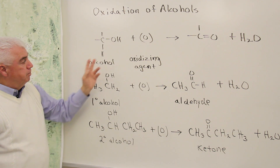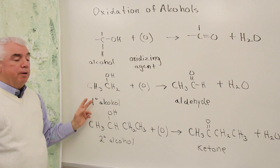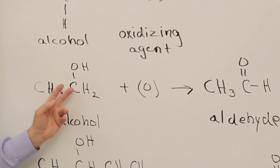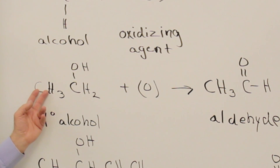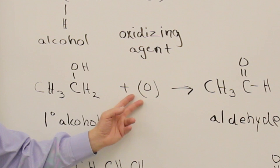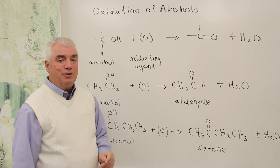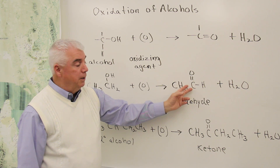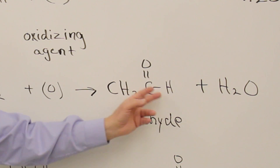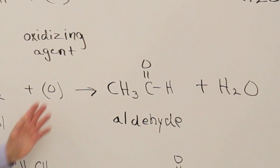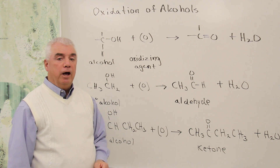Oxidation of alcohols is a pretty common reaction. Here I've got a primary alcohol — one in which the carbon containing the OH is attached to one other carbon. The oxidizing agent is going to remove two hydrogens. The position of the oxygen stays on that same carbon, giving a C double bond O. Because there are two hydrogens on that carbon and we take one, there's one left, and the other product is water. That C double bond O with the hydrogen attached is called an aldehyde.